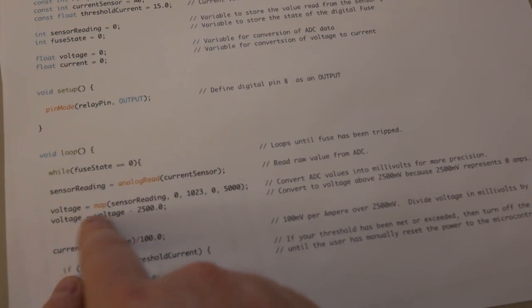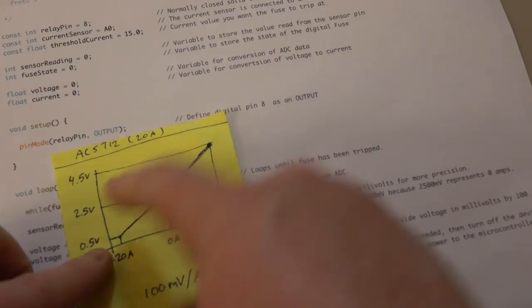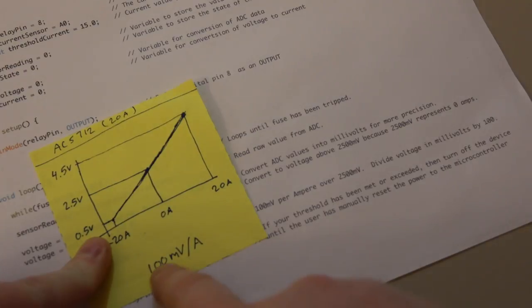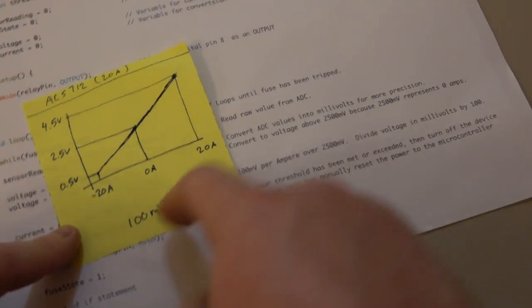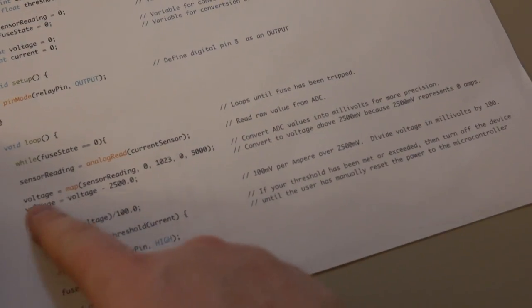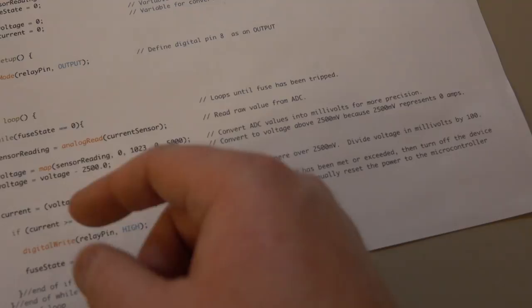And then we're going to subtract 2500 because if you remember, we're really interested in the voltage above 2.5 because the resolution is 100 millivolts per amp. So once you have the voltage, the current is just going to be the voltage divided by the sensitivity.